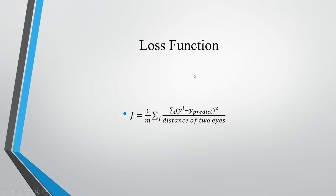This is the loss function we used in training our network. We first calculate the mean square error, and then we divide it by the distance of two eyes in order to decrease the influence of the size of the faces.